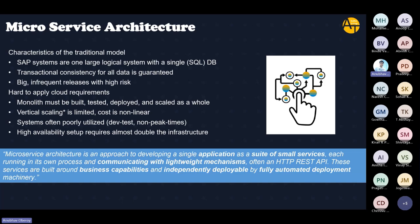In this architecture, we have characteristics of a traditional model. What are the characteristics of traditional application development in SAP? SAP systems are traditionally one large logical system with a single database. This is what we usually have with a SAP system — one large logical object with a single DB. This is why they are called monolithic systems.